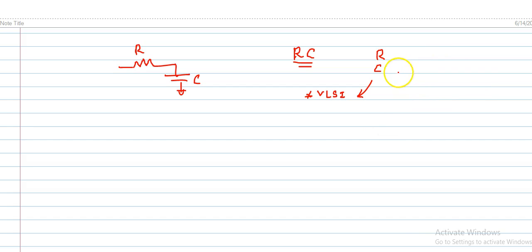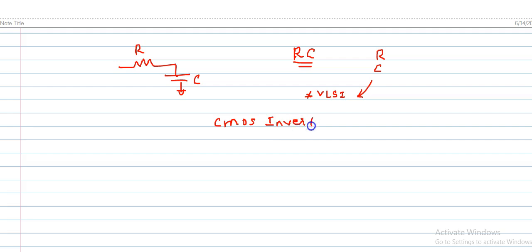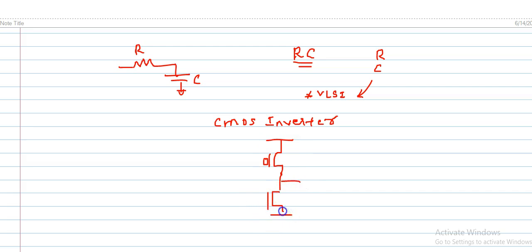Let me give an example of why RC circuits are so important. Consider a simple circuit called a CMOS inverter. A CMOS inverter has two MOSFETs — one is called a P-MOSFET and another is called an N-MOSFET, connected together. This device is my PMOS and this is my NMOS, with gate connections shown here.